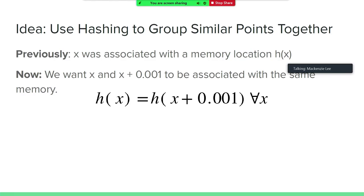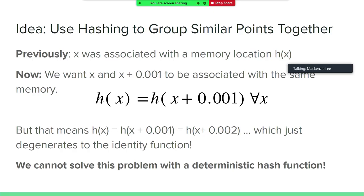The idea here is that we're going to use hashing like we did for exact duplicate detection, but now we're going to use it to group similar points together. The example from before about why we can't just construct one hash function that does this perfectly explains the problem well. We would like input x and input x plus a very small delta to go to the same memory location, to have the same hash code. We'll quickly see that this is not really possible — specifically, if these two things need to happen, then all values collapse into one hash output. This can't be solved with a deterministic hash function.